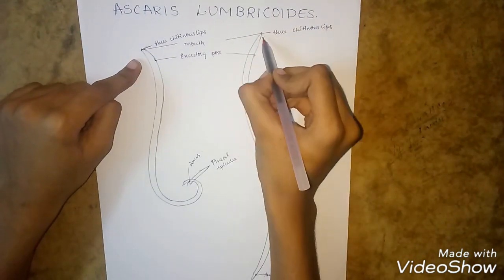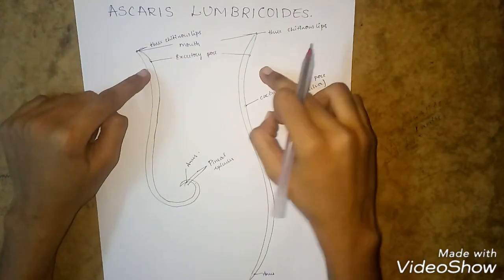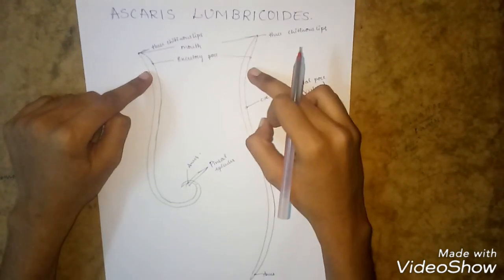These three chitinous lips surround the mouth. Close to the mouth, there is a midventral pore called the excretory pore.